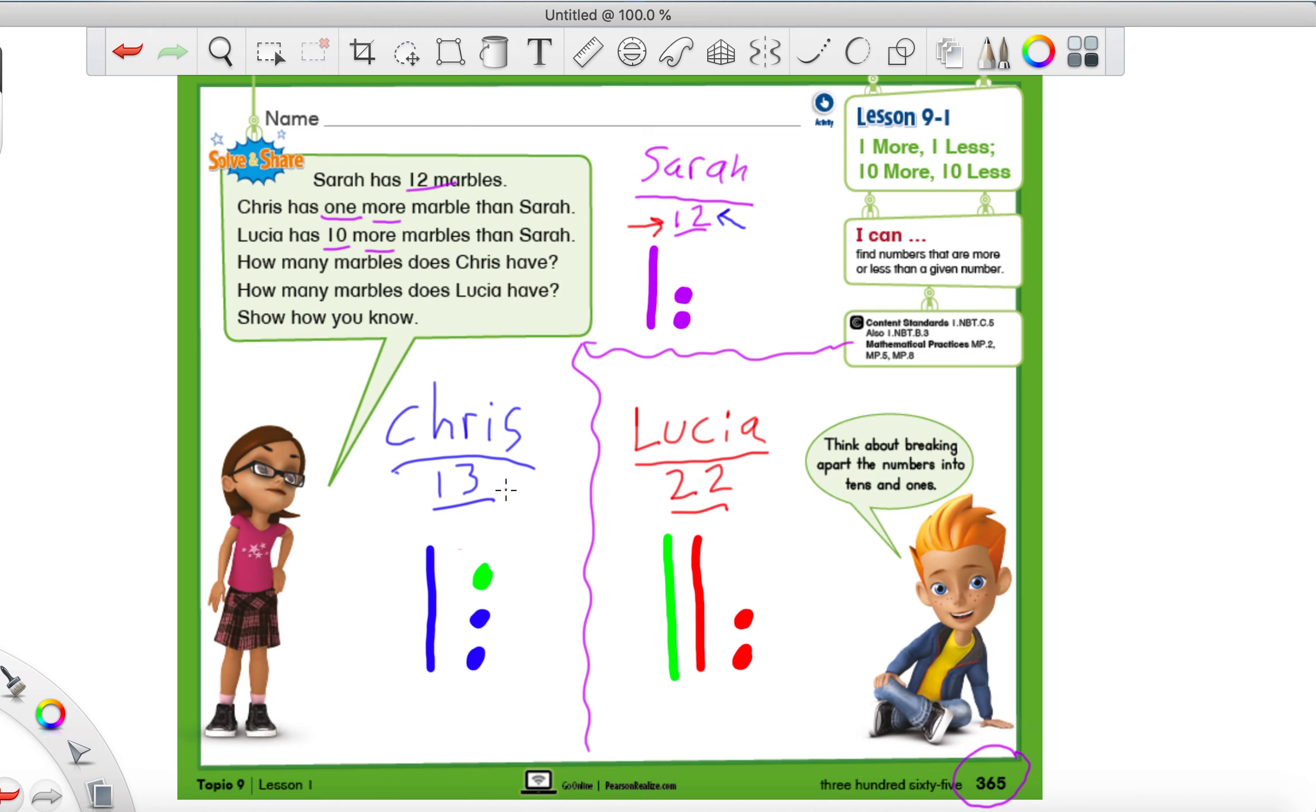We're just going to start by drawing out the original number, which was 12: a 10 stick and 2 ones circles. Now how could you show 10 more in this picture? Would we add another 10 stick or another one circle? Go ahead and put down which one you think it is. If we wanted to show 10 more, we would draw another stick. Because remember, these sticks are 10. When they want us to show 10 more, we draw another 10.